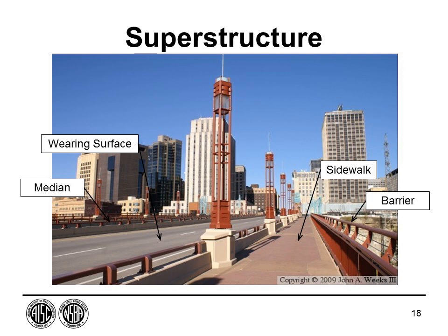Visible superstructure elements include the median barrier, wearing surface, sidewalk, and barrier. Barriers protect vehicles and pedestrians from falls or collisions. Sidewalks provide pedestrian access across the structure. Wearing surfaces provide a smooth ride for motorists. The median separates traffic, and the exterior barrier protects pedestrians.